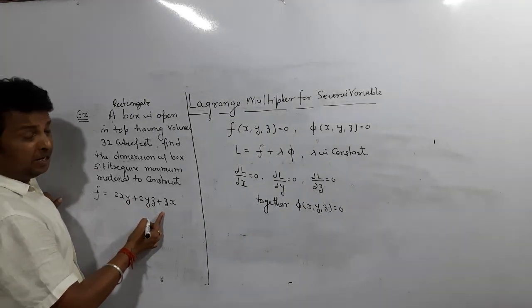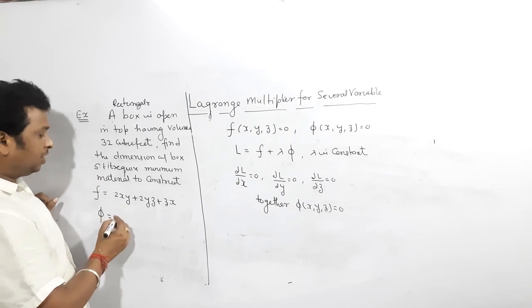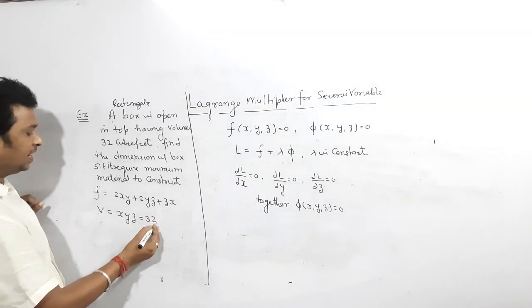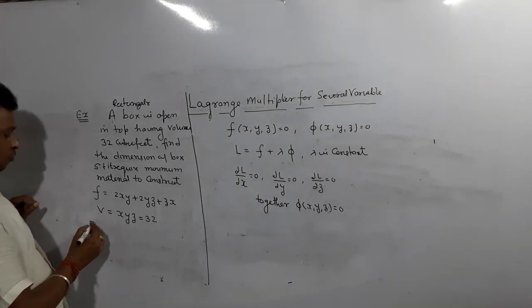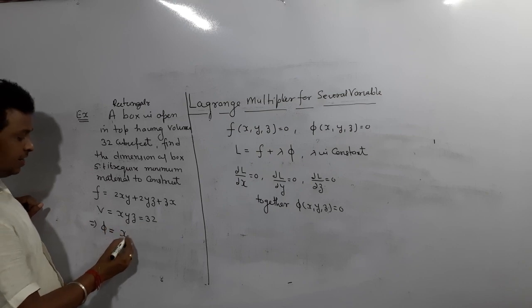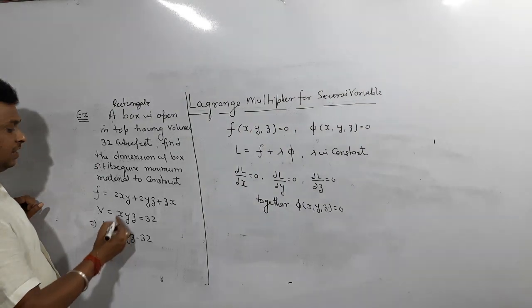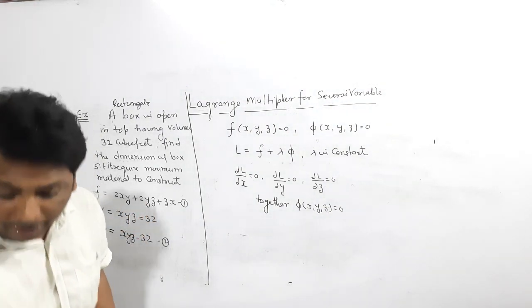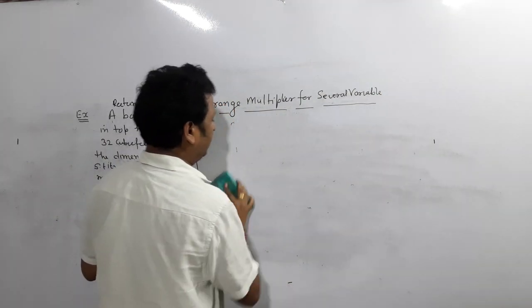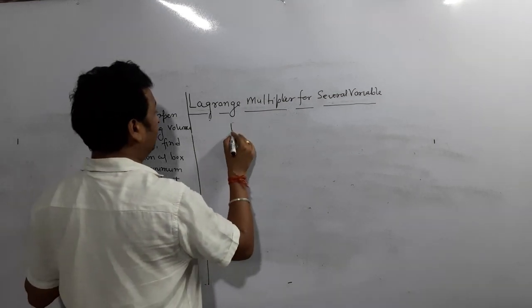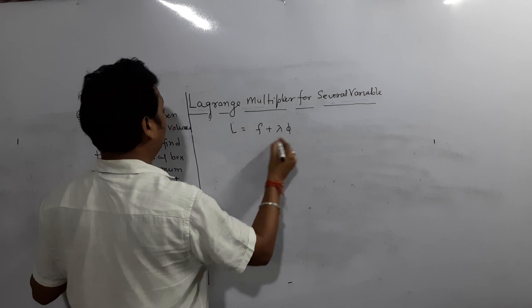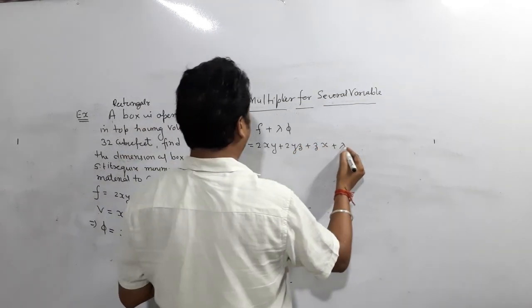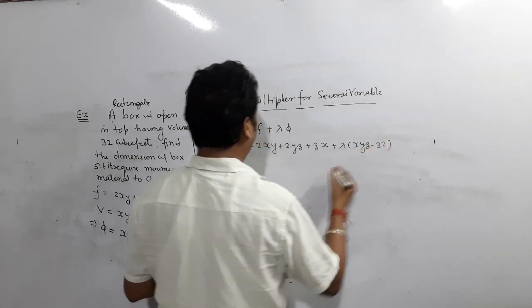We want to minimize this surface area under the condition that the volume is given. Volume = xyz = 32. So your f = 2xy + 2yz + zx (equation 1), and your phi = xyz - 32 (equation 2). We are going to minimize equation 1 using equation 2 via the Lagrangian multiplier. The Lagrangian function is L = f + lambda * phi = 2xy + 2yz + zx + lambda(xyz - 32).